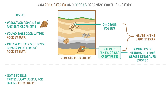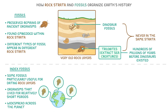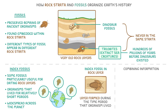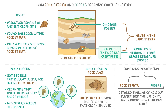Some fossils are particularly useful for dating rock layers. These are called index fossils, and they are organisms that lived for relatively short periods but were widespread across the planet. When scientists find an index fossil in a rock layer, they know that layer formed during the relatively narrow time period when that organism lived. By combining information from rock strata and fossils, scientists can piece together a detailed timeline of how our planet, and the life on it, have changed over billions of years.